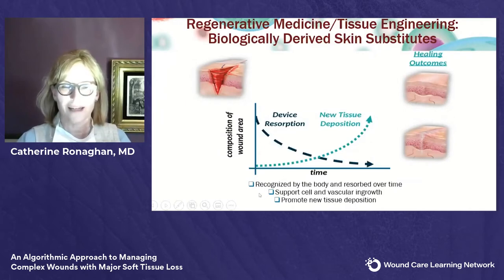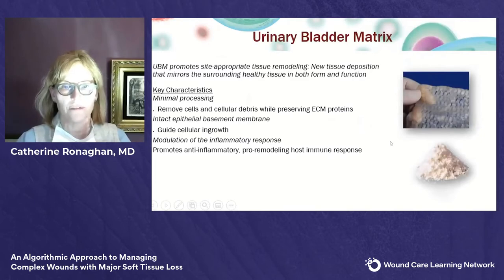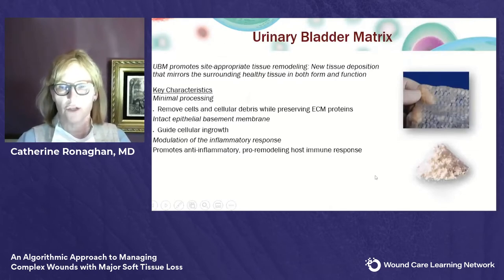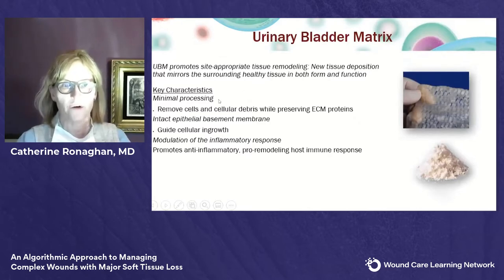It's important that the material is recognized by the body and then resorbed over time rather than just tolerated. The urinary bladder matrix in particular promotes site-specific tissue remodeling. New tissue will be deposited that mirrors the healthy tissue adjacent to it. The key characteristic that sets this material apart is that it's derived from a pig bladder, so processing is particularly gentle.